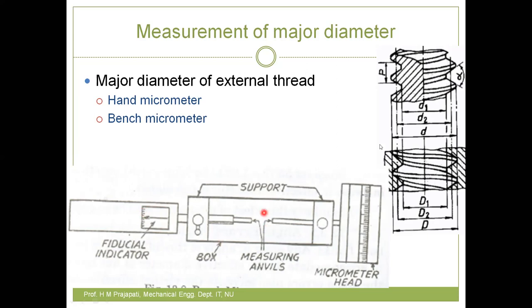To do the measurement, you need to arrange the external screw such that its axis is perpendicular to the axis of the anvils of the micrometer. You hold the screw by hand and then close the micrometer head. As you close the micrometer head, contact is made between the screw crests and both anvils. Some pressure will be indicated on the fiduciary indicator. Maintain that pressure, and then you can get the reading from the micrometer head, which gives you the external diameter of the screw.